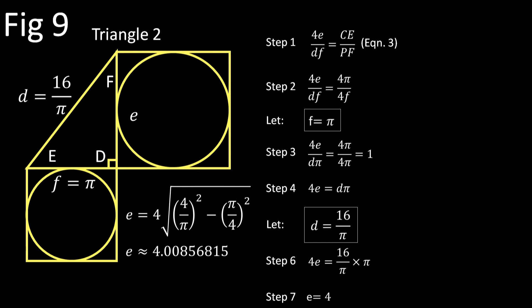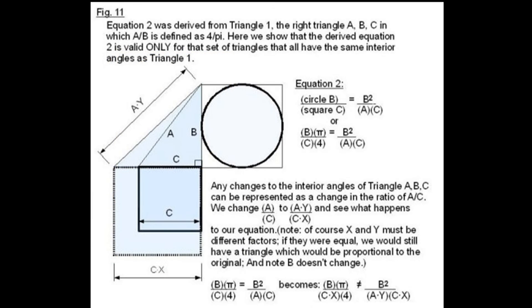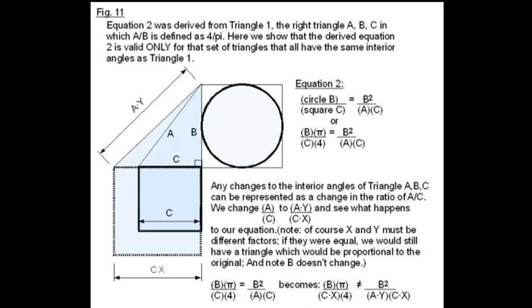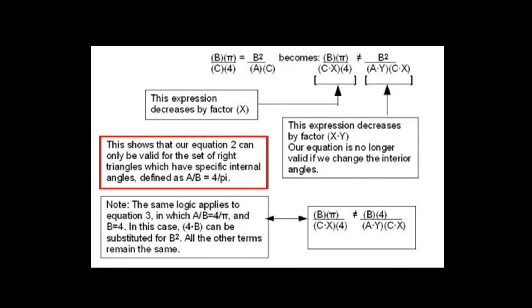But of course Wolham knew that. Now for the life of me I couldn't understand the point behind Wolham's sidebar on similar triangles. He might just as well have gone 'Look, squirrel!' and then continued on with his analysis without getting sucked into the details. His conclusion is that Equation 2 can only be valid for right triangles with specific internal angles where the ratio of the hypotenuse over the long side equals 4/π, and the same goes for Equation 3.